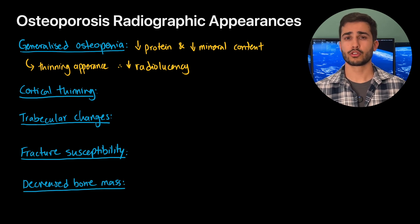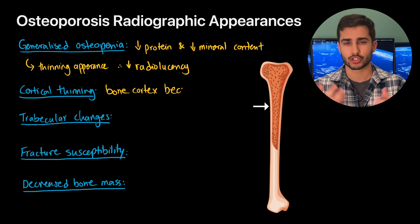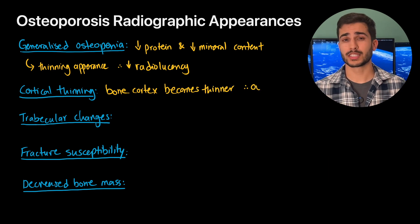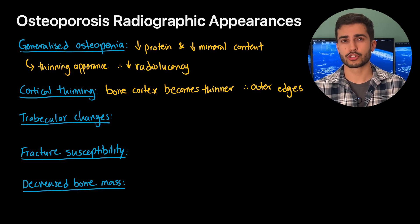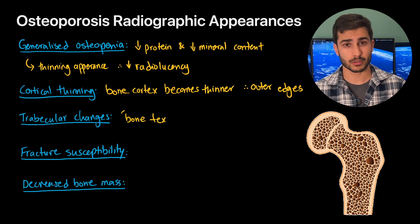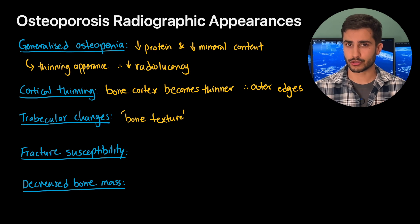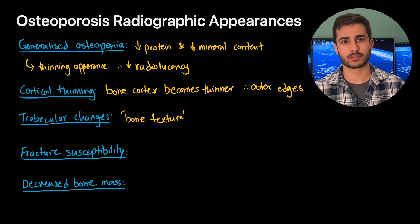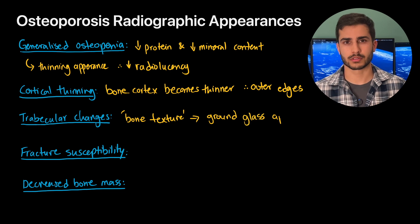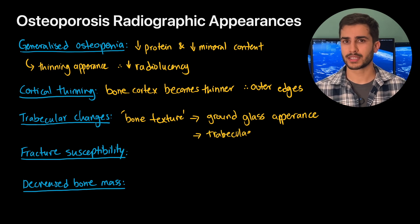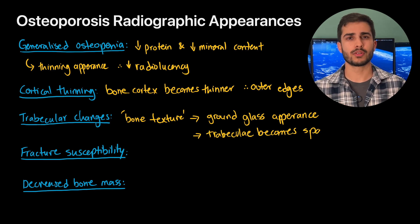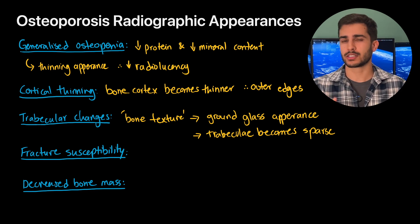Cortical thinning is when the bone cortex — the dense structure surrounding the bone marrow — becomes thinner, where the outer edges of the long bone show a reduction in thickness. Trabecular changes refer to changes in bone texture; on an x-ray it looks like it has a textured appearance. When bone mineral density is reduced, the trabeculae or spongy pattern of the bone changes, and it often leads to a ground glass appearance — that hazy grey look. In advanced cases, the trabeculae may become so sparse that the bone has a washed-out appearance.